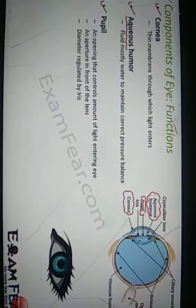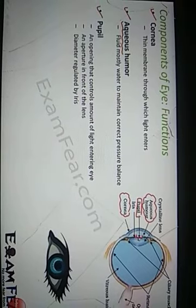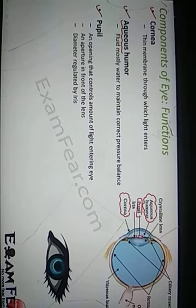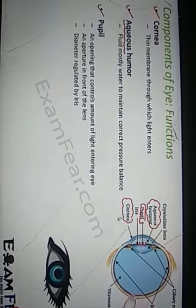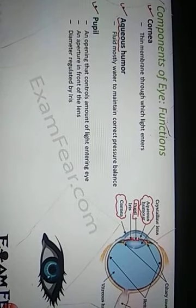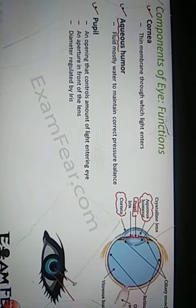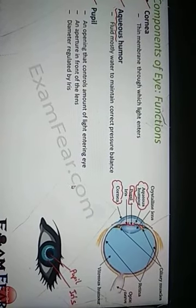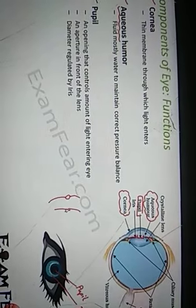The pupil is an important part because it controls the amount of light entering the eye. Through this opening, light enters. How much light enters is decided by the size of the pupil. The size of the pupil is decided by the iris. The iris is the colored part you see, and the pupil is the opening. The iris controls the size of the pupil. Whenever there is too much light in the surroundings, we do not want all of it to enter, so the size of the pupil decreases — the iris comes together, leaving a very small opening.